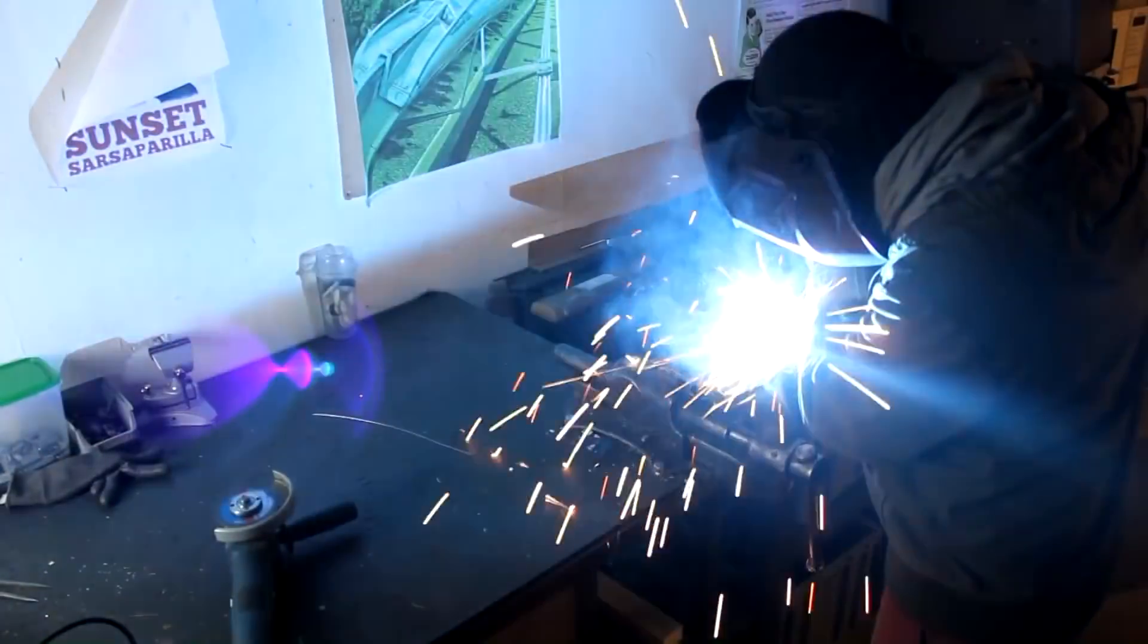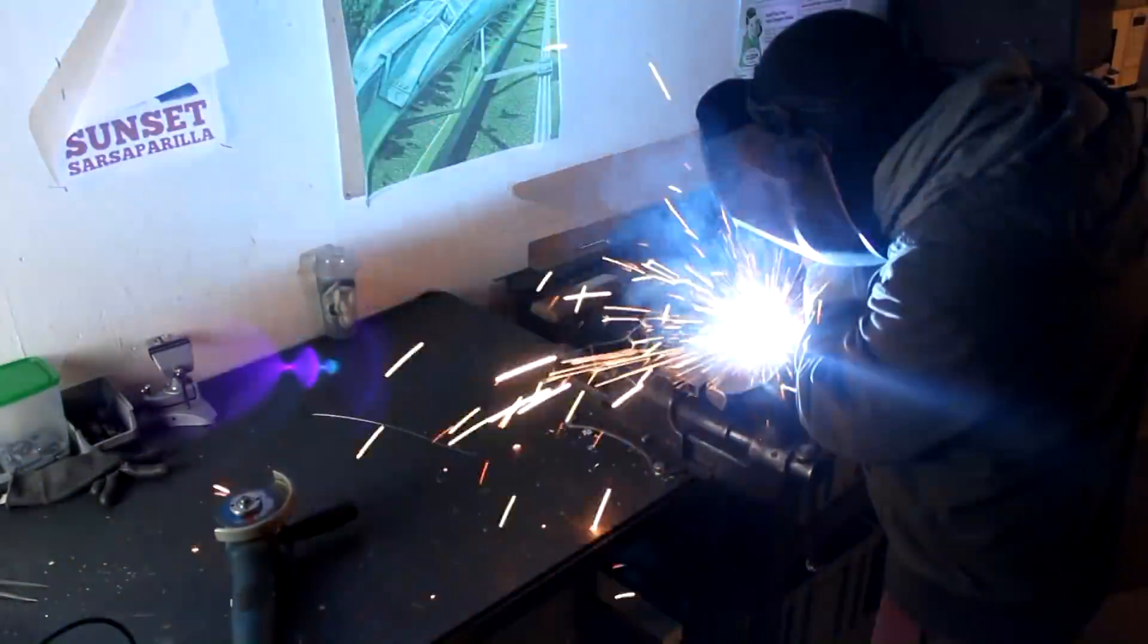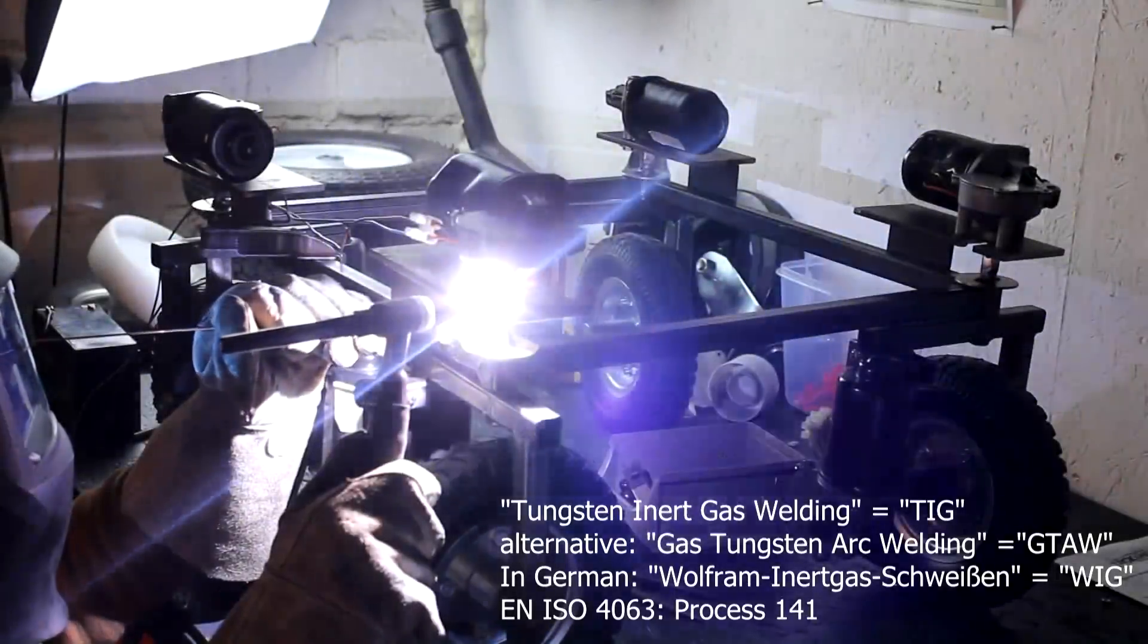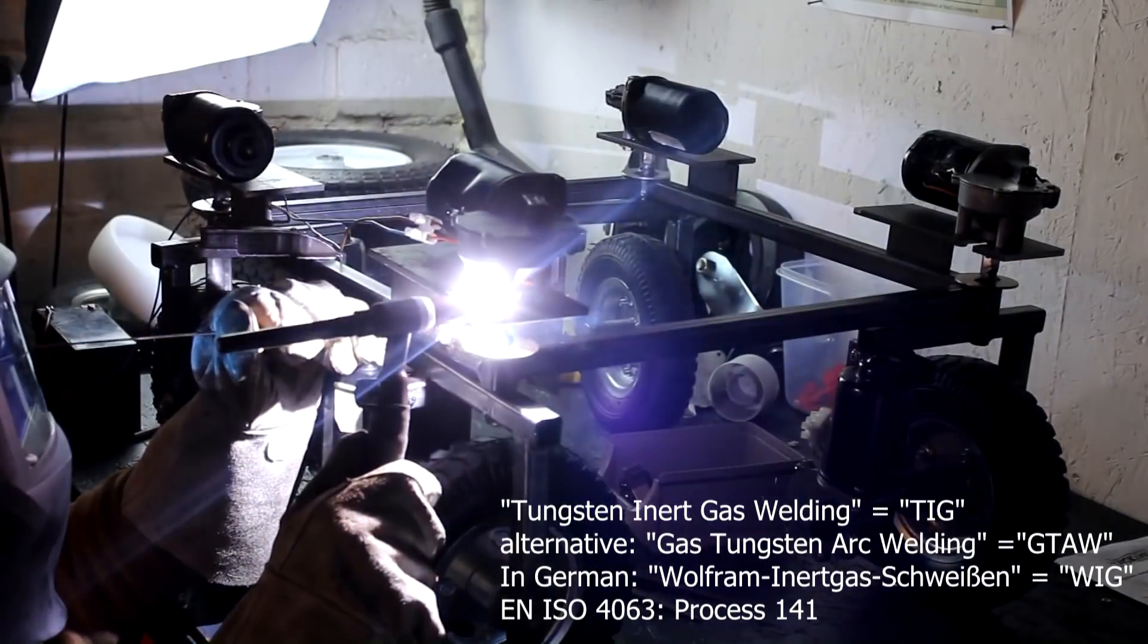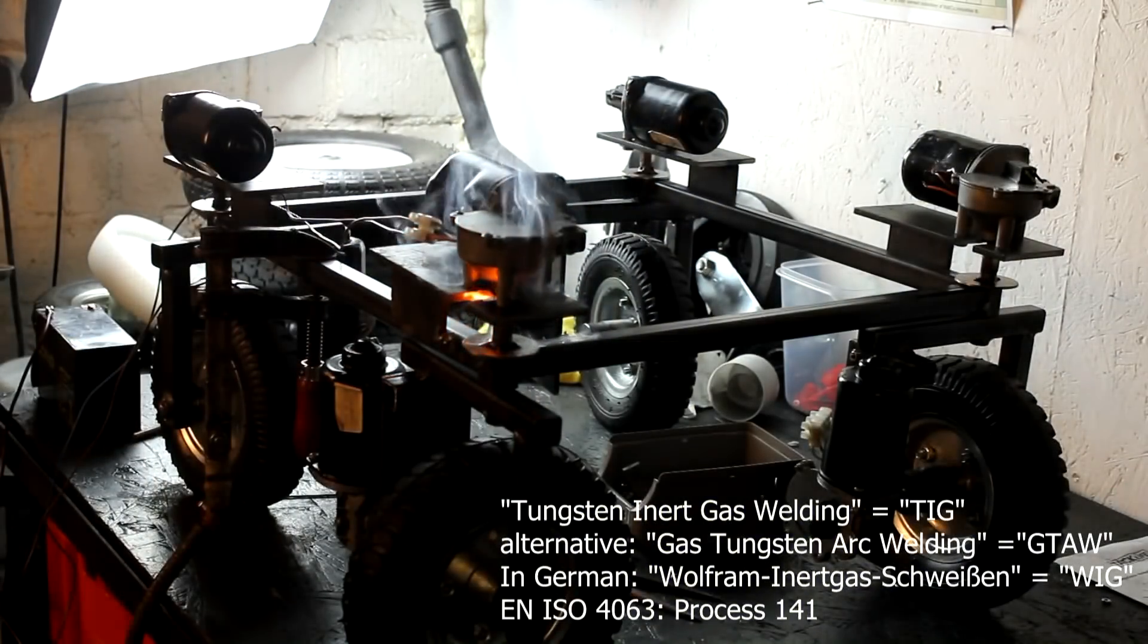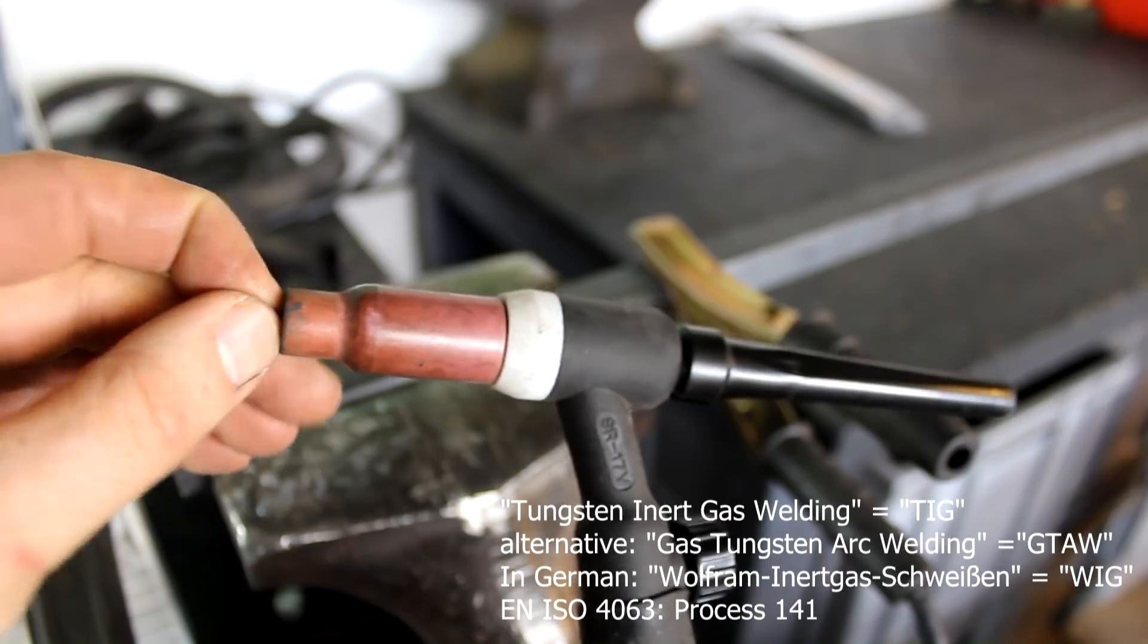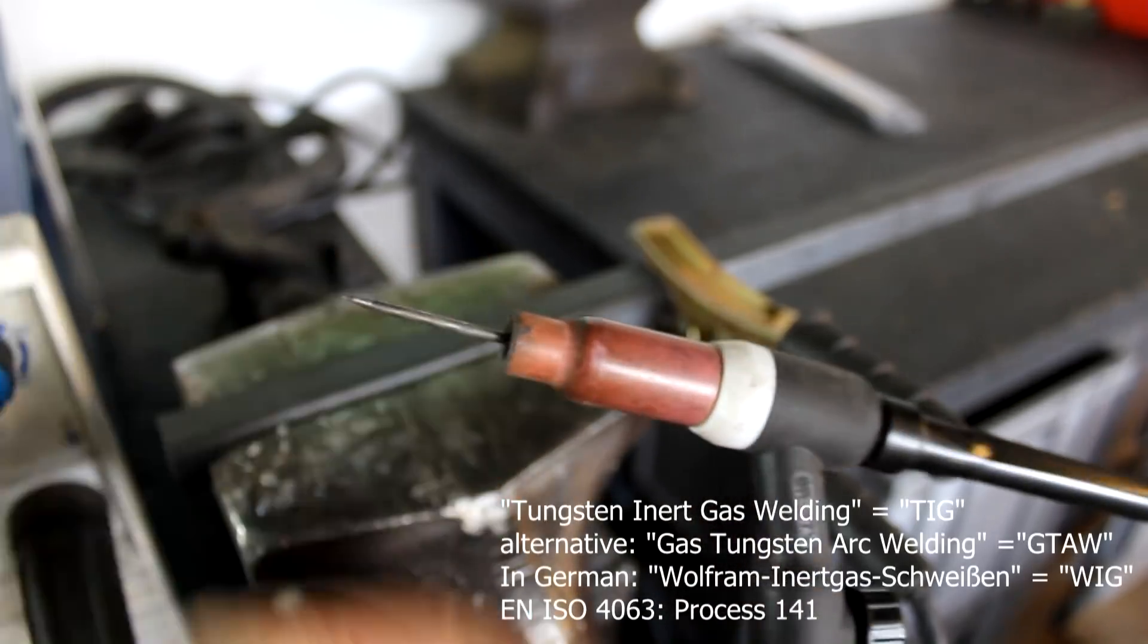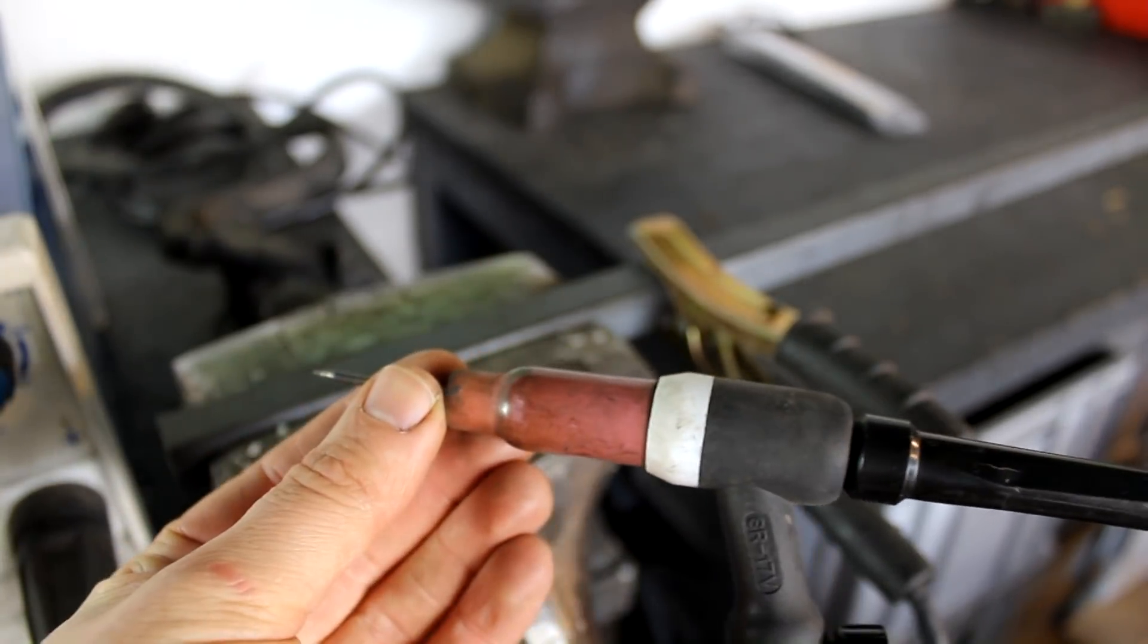TIG welding is an abbreviation for tungsten inert gas welding, and that means that you're welding with a non-consumable tungsten electrode, an inert gas like argon.